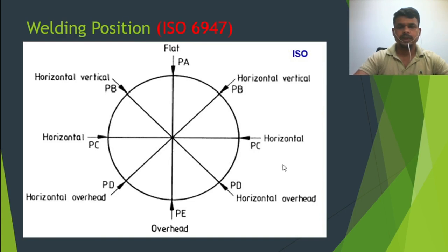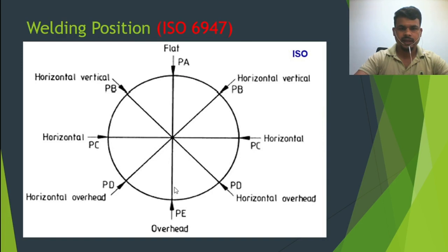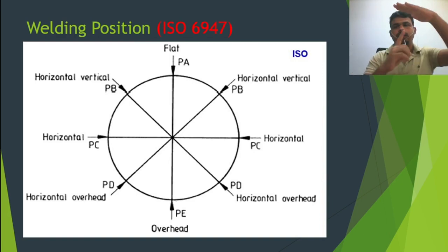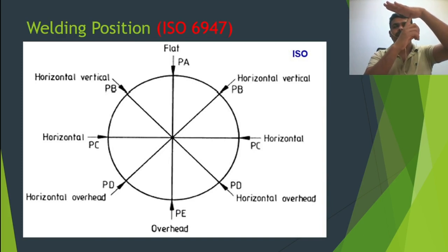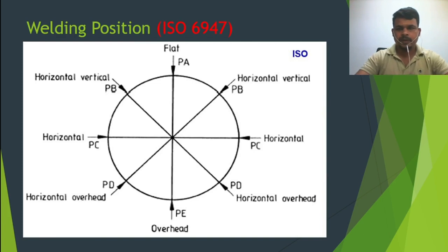PC position is horizontal — this is the 2G position. Then PD is horizontal overhead. If you consider flat is on top, overhead means you are welding from the bottom with your job at the top level — this is the overhead position. PE is the 4G position. So basically, these are the welding positions.